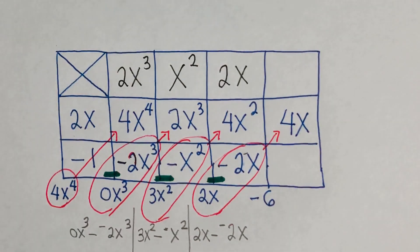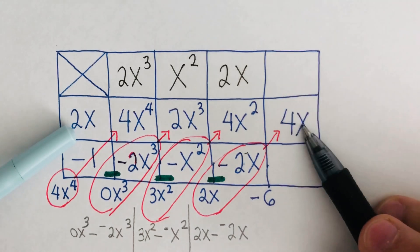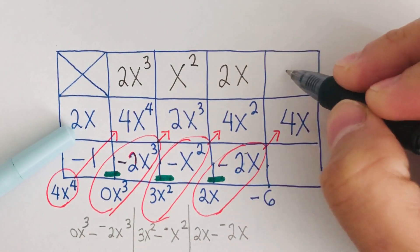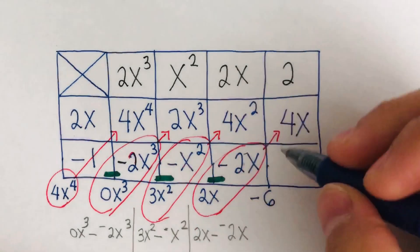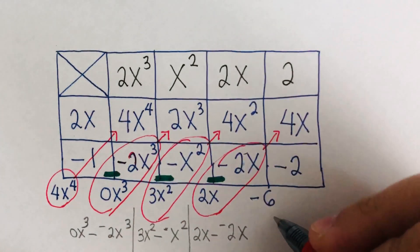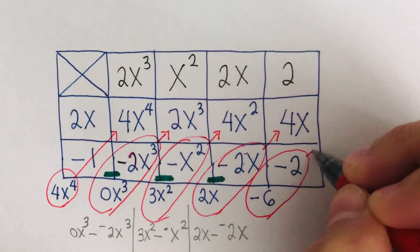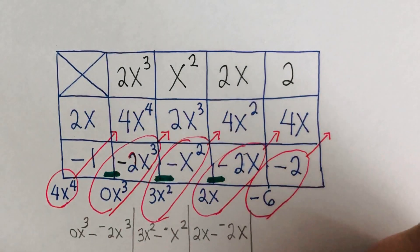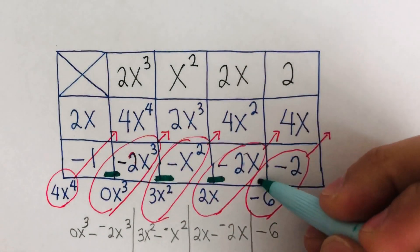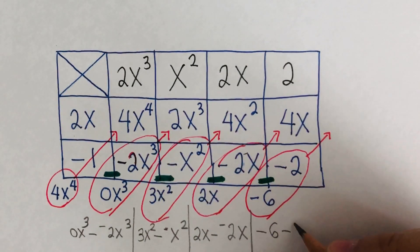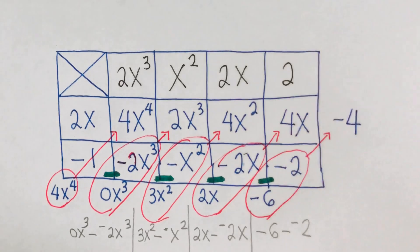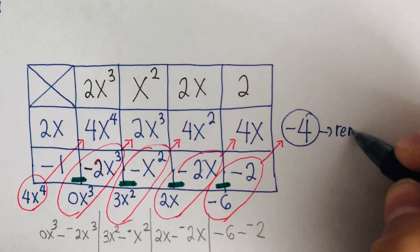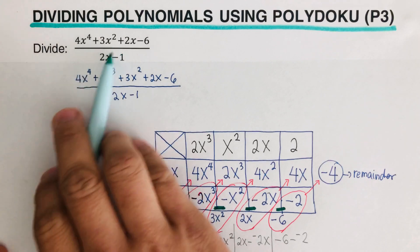I need to find what to write so that multiplying by 2x gives 4x — that value is 2. So 2 times 2x is 4x, and 2 times negative 1 is negative 2. I put negative 2 there. Subtracting: negative 6 minus negative 2 gives negative 4. I write negative 4 here, and this is our remainder.